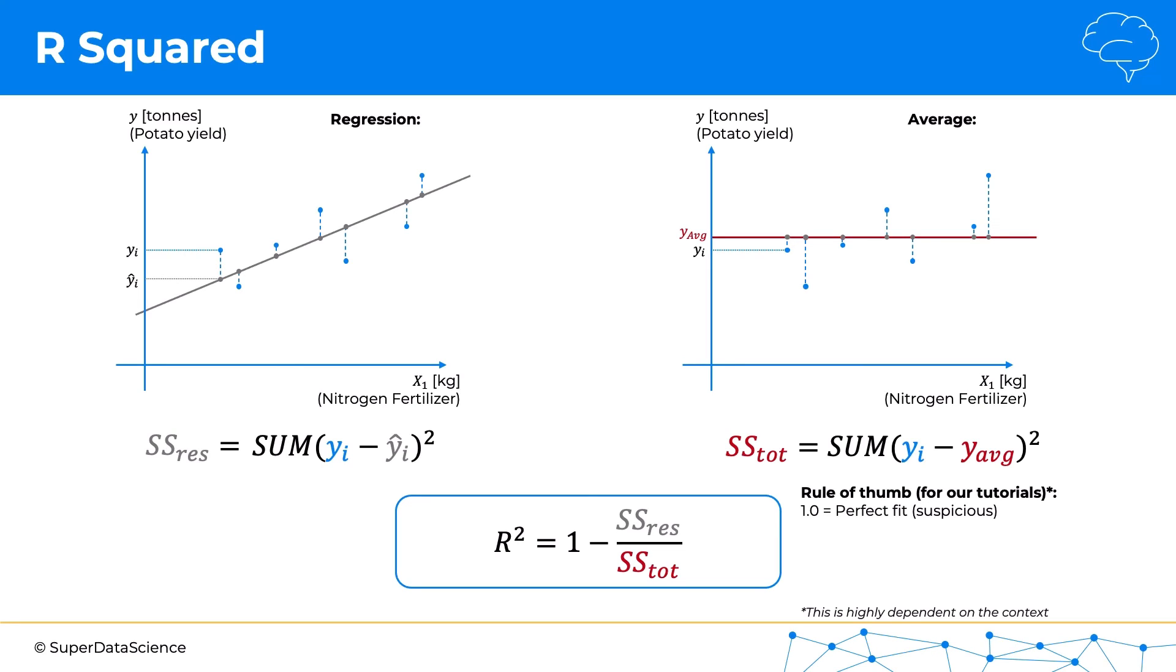So if you have an R-squared of one, that's a perfect fit—that means the residual sum of squares is zero, and basically your line is going through all the data points, which is virtually impossible, so it's very suspicious. If your R-squared is about 0.9, that's a very good model.